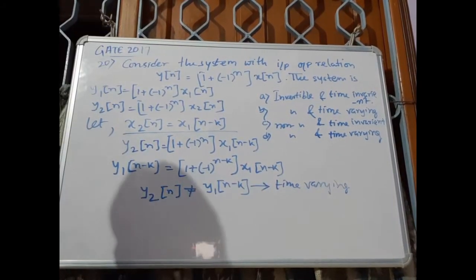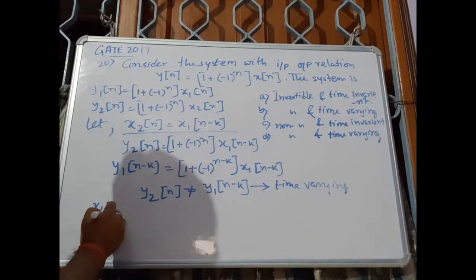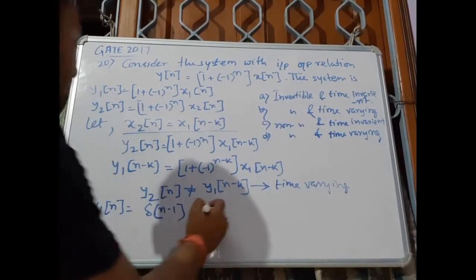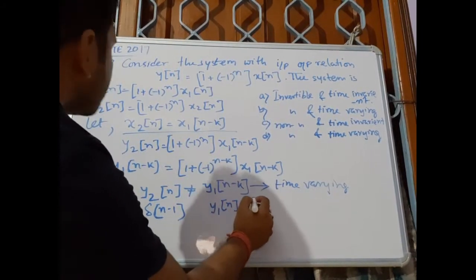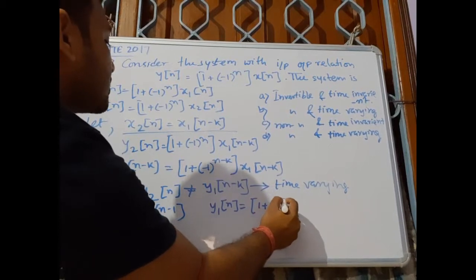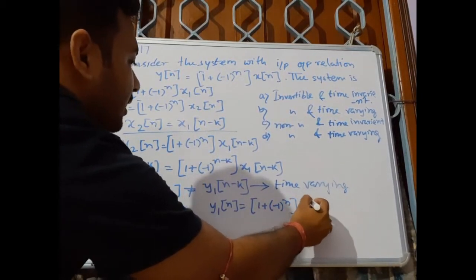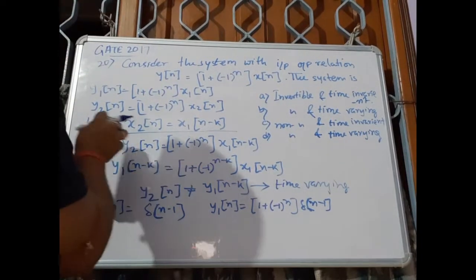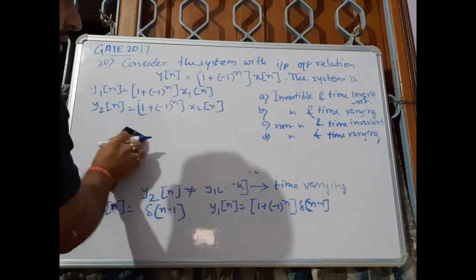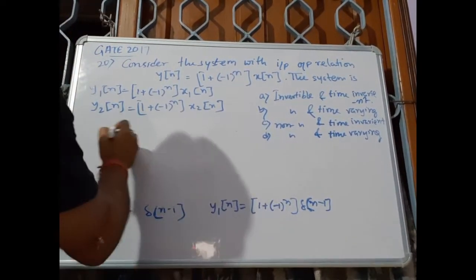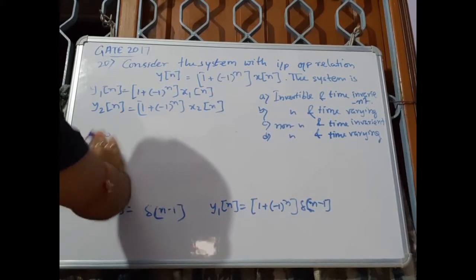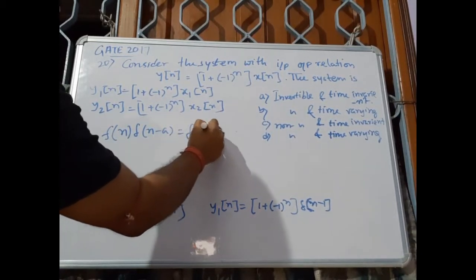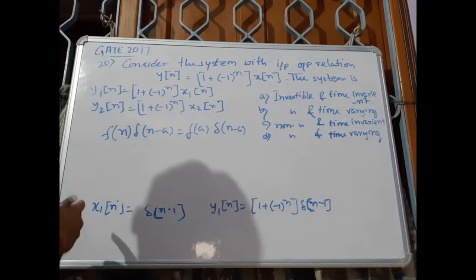Now to test invertibility, let x1[n] = delta[n] - (-1)^n * delta[n - 1]. We use the property that f(a) * delta[n - a] = f(a) * delta[n - a], i.e., a function evaluated at n = a times the shifted delta.